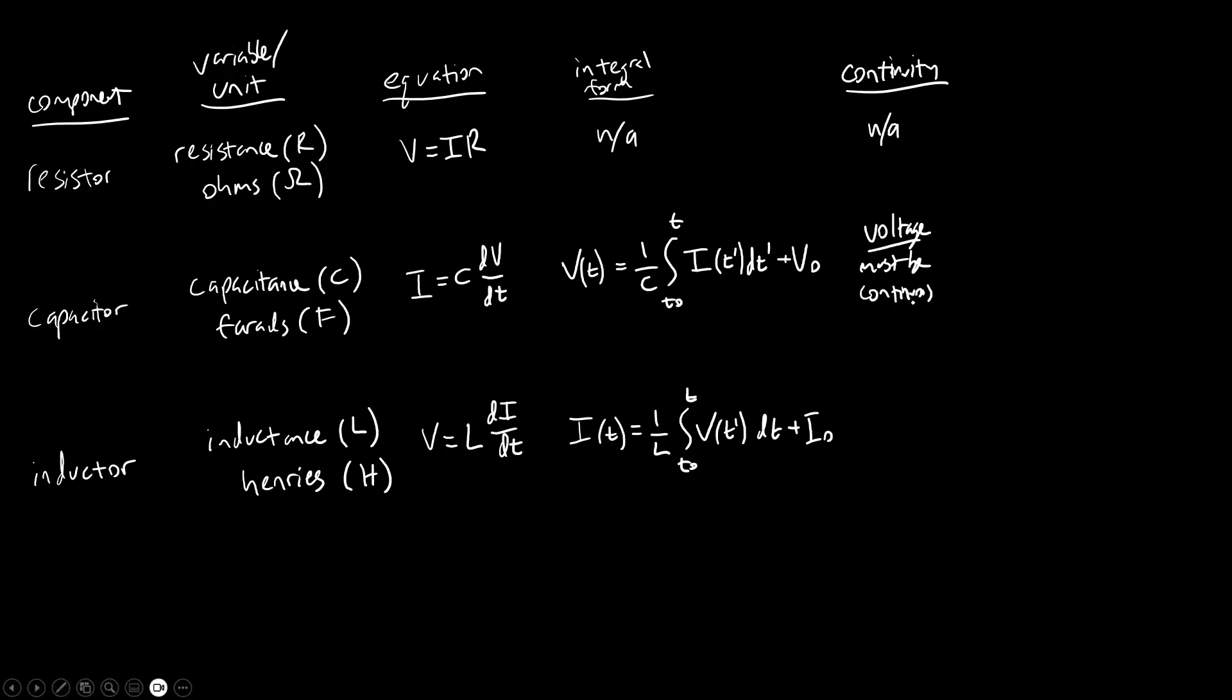For the capacitor we have a rule that voltage must be continuous. This comes from this equation where an instantaneous change in voltage would mean an infinite derivative here, which would require infinite current, which would therefore require infinite power. So that's why your voltage has to be continuous.